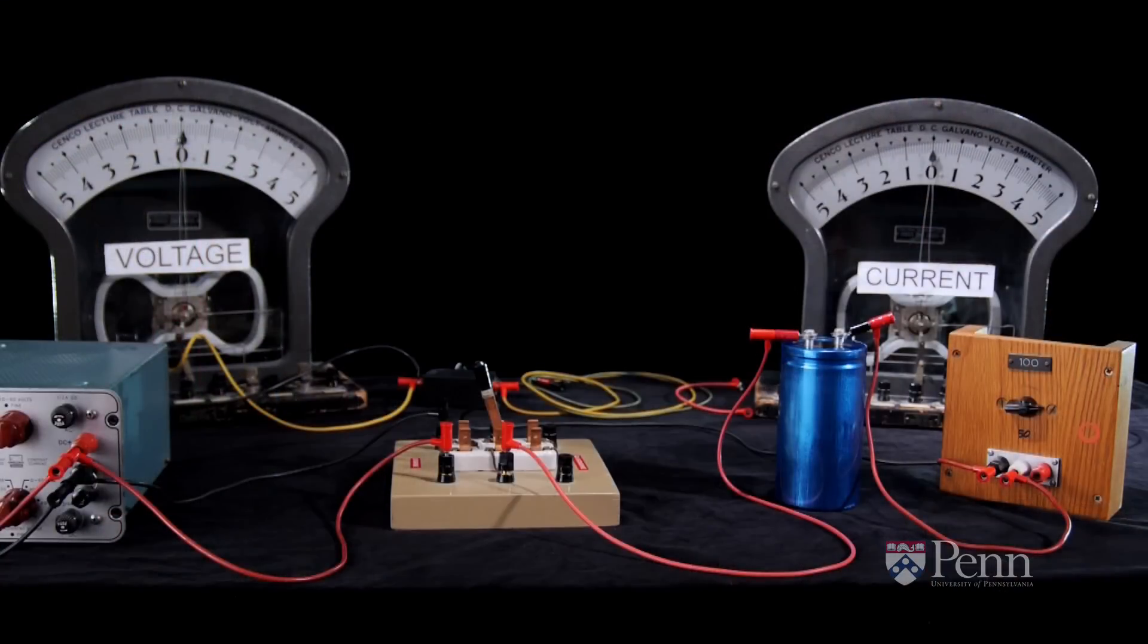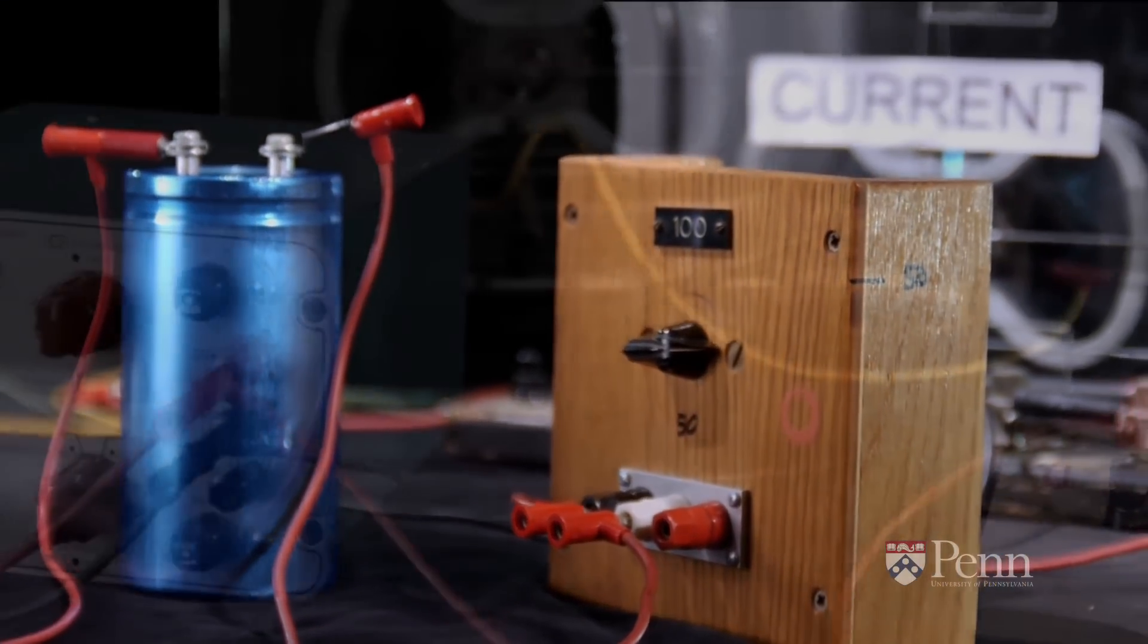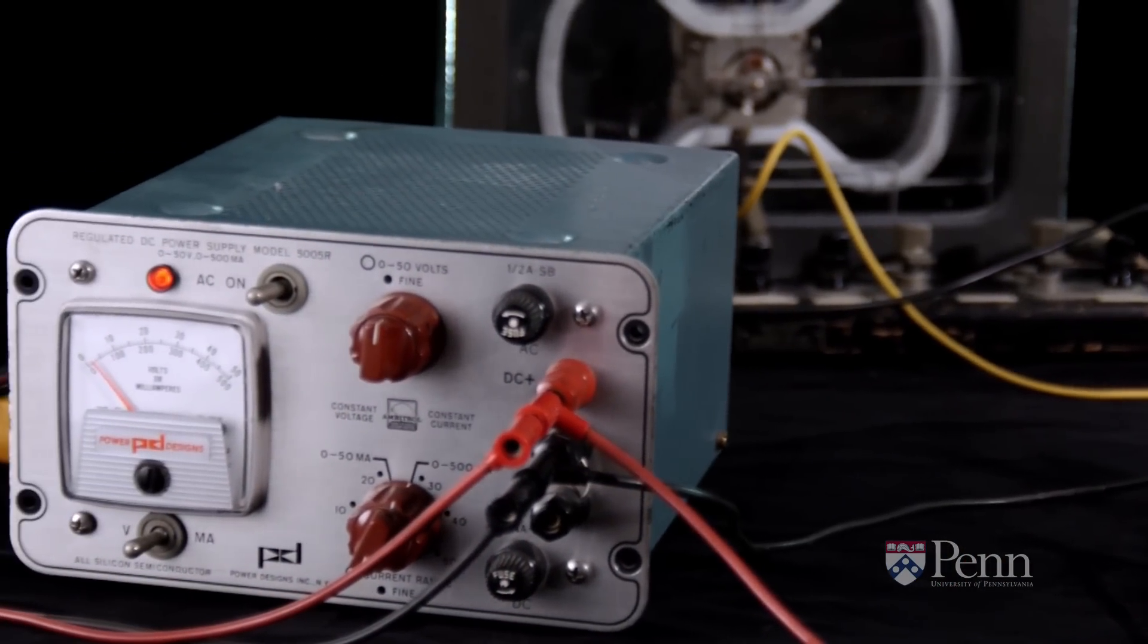The circuit that we're going to use is a very simple one. We've got a capacitor in series with a resistor. We're going to connect them to a power supply.